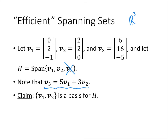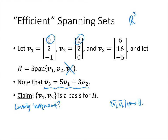To show {v₁, v₂} is a basis for H, we need two things: linear independence and that {v₁, v₂} spans H. Why is it linearly independent? Because the set has only two vectors, it's linearly independent if v₁ and v₂ are not multiples of each other. Looking at v₁ and v₂, v₁ has a zero in its first component while v₂ does not, so it's impossible for one to be a multiple of the other. Linear independence is confirmed.